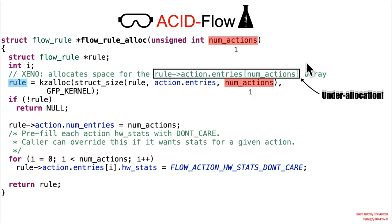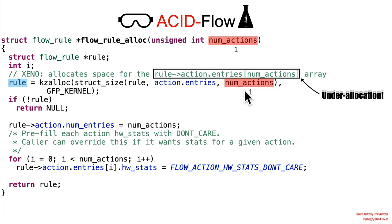Later on there's going to be a different loop that can loop through 50 times, and it'll be operating on this array that was allocated with a smaller number of entries. We can't tell based on this code alone — you have to read the entire code, put it all together in your mind, and say: what if `num_actions` was smaller than the total number of rules? Then you'd realize that as an attacker you could cause an under-allocation here.